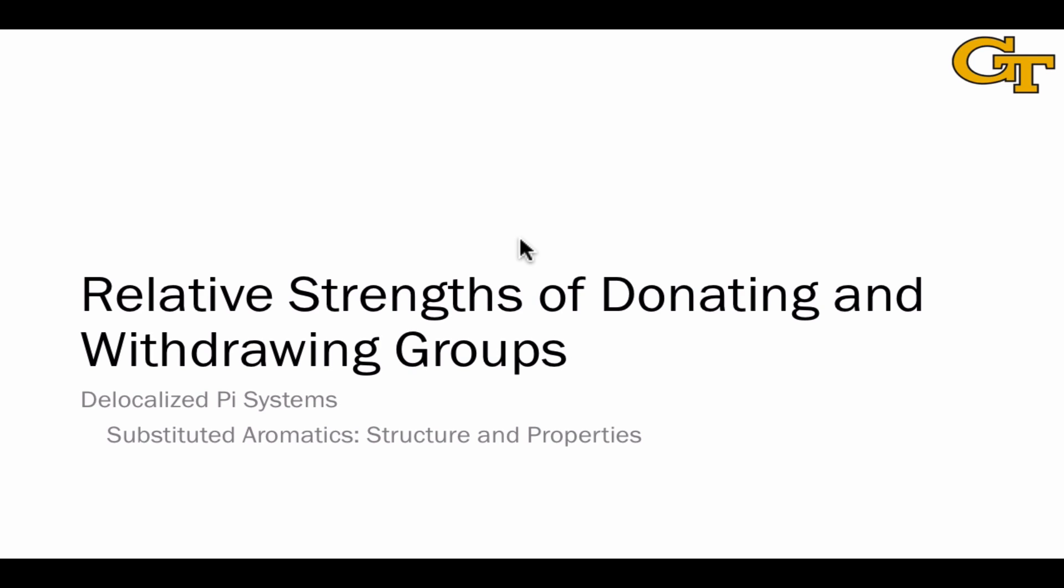At the end of the last video, we divided groups up into net electron withdrawing and net electron donating groups. In this video, we're going to refine this distinction a little bit more and develop a continuum that runs all the way from strongly donating to strongly withdrawing and learn the factors that play into the relative strengths of donating and withdrawing groups.